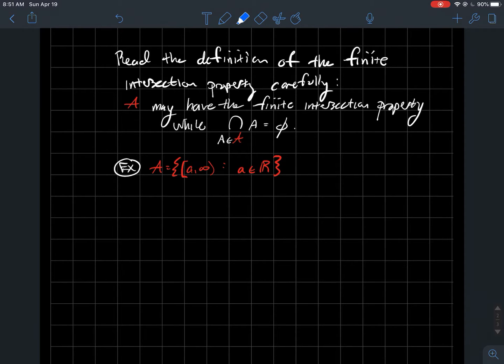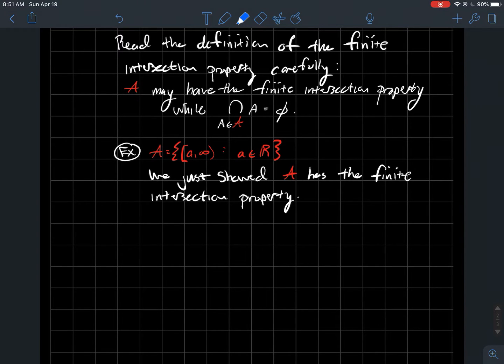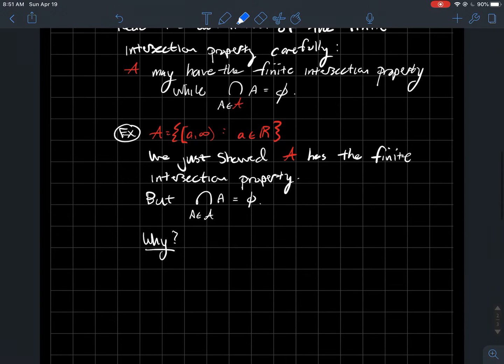Let's look at my same example. Fancy A is all these intervals on the real line, including the left endpoint. We just showed this A has the finite intersection property. In other words, if I took finitely many of these intervals at a time, their intersection is always not empty. But if you just took the intersection of all of these intervals, not finitely many at a time, just all of them, you would get the empty set.